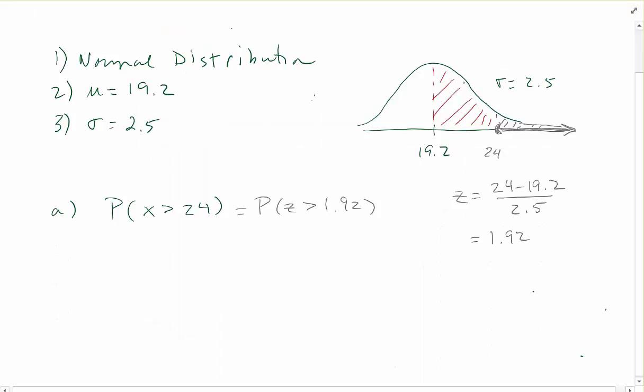So this area must be 0.4726. Now to get the area I want I'm going to have to subtract that from 0.5. I know the upper half of my distribution is 50% of the probability. So 0.5 subtract 0.4726 is 0.0279 or approximately 2.8%.